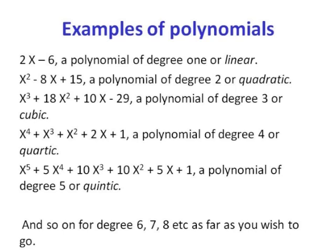I'm not going to keep on going for the full hour, but you can imagine the pattern for degrees 6, 7, 8, and so on. The numbers appearing in a polynomial are called the coefficients. For the cubic example, the coefficients are 1, 18, 10, and minus 29 — they tell you how many there are of the different powers of x.